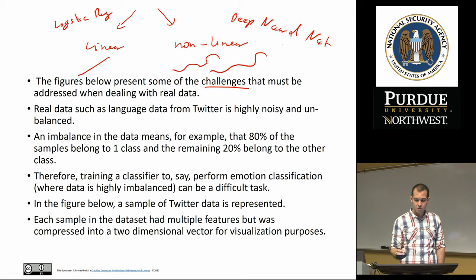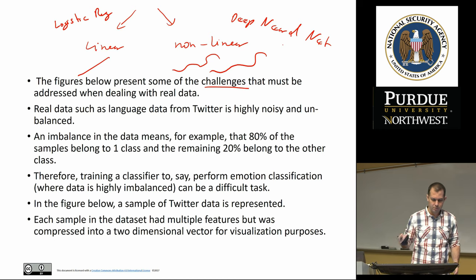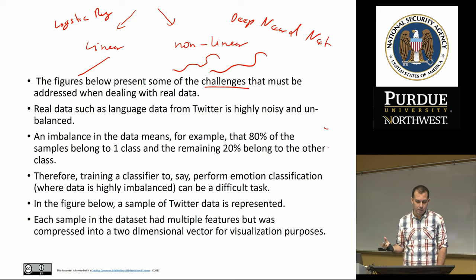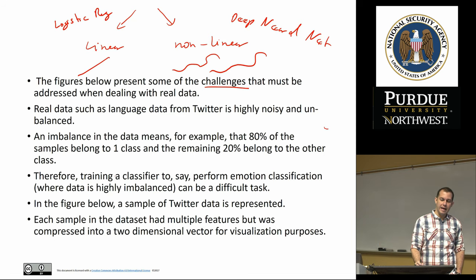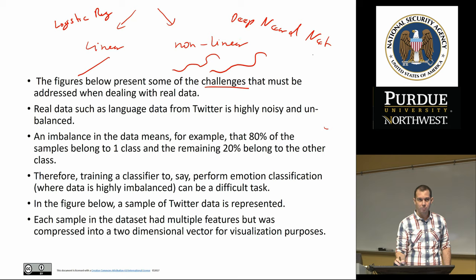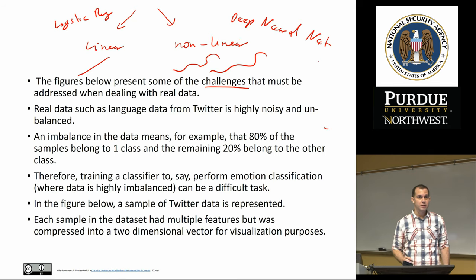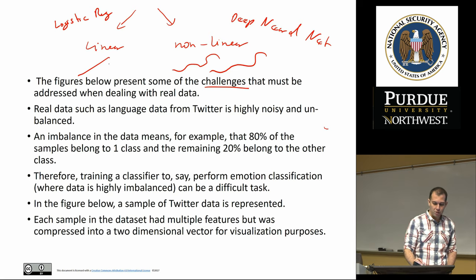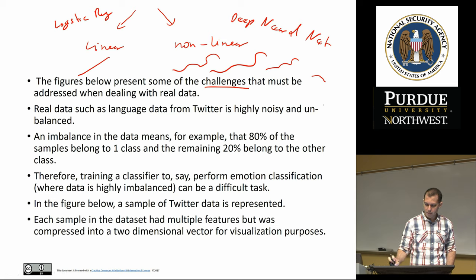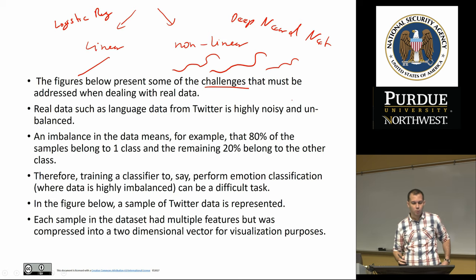Deep neural nets don't just create nonlinear functions — they have other properties as well. So we lead from logistic regression, which is actually a really good classifier, to more advanced algorithms like deep neural nets. So the difference between linear and nonlinear algorithms is that a linear algorithm only builds straight-line functions, whereas nonlinear algorithms can be curves, polynomials, or other shapes. This matters because not all problems are easy to classify, and not every problem has data that looks linearly separable.